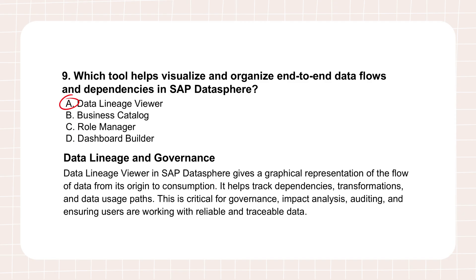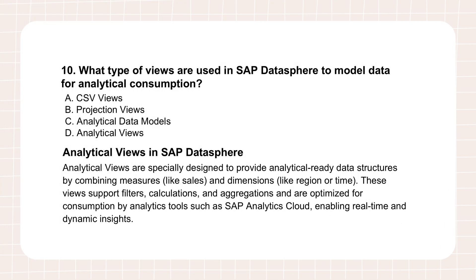After cleaning, integrating, making data understandable, and tracking its lineage, what's the final optimized structure in SAP Datasphere specifically designed to be consumed by tools like SAP Analytics Cloud for reports and dashboards? That would be the analytical view — sometimes called an analytic model. These structures are purpose-built for reporting and analysis. They combine measures, the numbers you want to analyze, with dimensions — the attributes you slice and dice by, like time, region, and product. They support calculations, hierarchies, and aggregations, all optimized for analytical querying, making them the pre-prepared, business-ready foundation that analytics tools connect to.